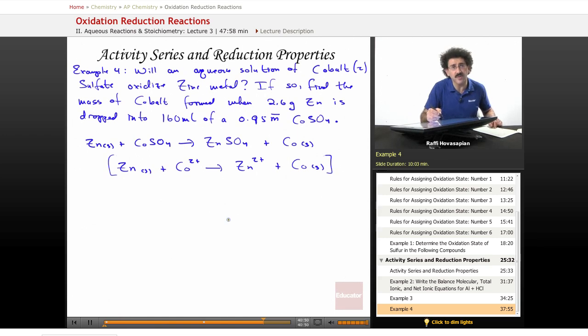And again, the stoichiometry is one-to-one, not a problem. So, now let's go ahead and see what's going on. We have 2.6 grams of the zinc metal, so let's find out how many moles that is.